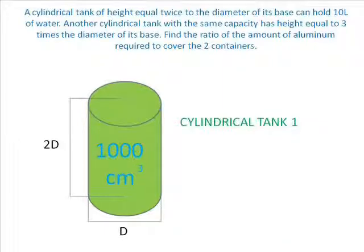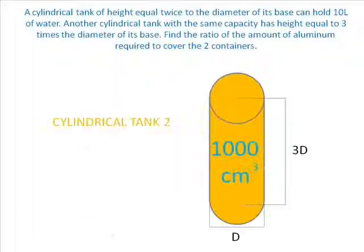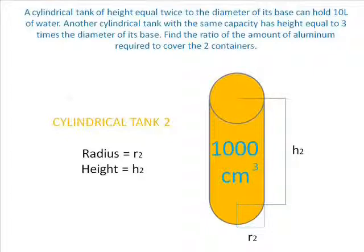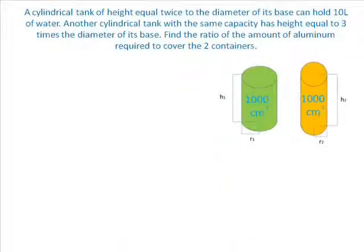Now, let the radius and height of the green cylinder denote as R1 and H1 respectively and the radius and height of the orange cylinder be R2 and H2 respectively. Since the volume of both cylinders are the same, 10,000 is equal to pi R1 squared H1 of the first cylinder and is also equal to pi R2 squared H2 of the second cylinder.